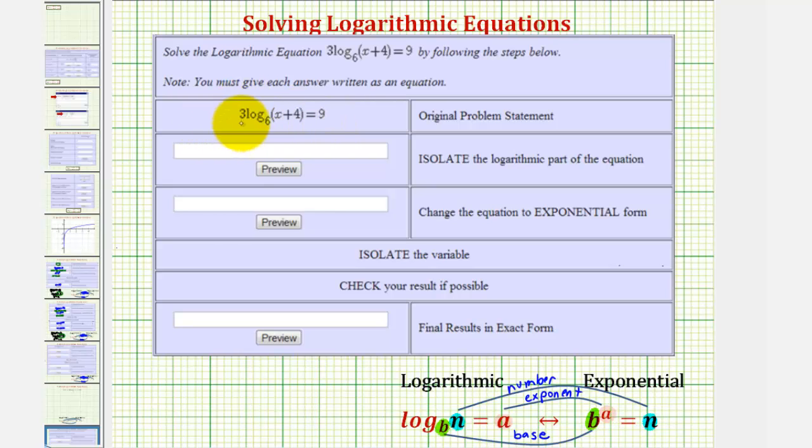We want to solve the given log equation: three times log base six of the quantity x plus four equals nine. To solve a log equation with a single log, we want to isolate the log term and then write the log equation as an exponential equation to solve for x.